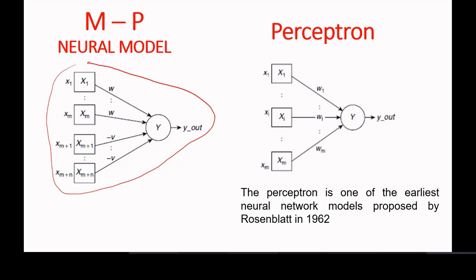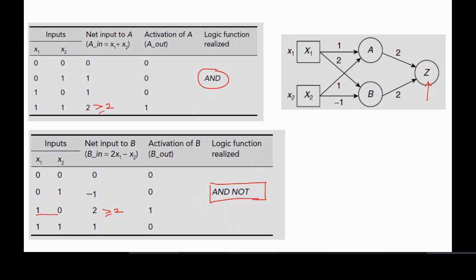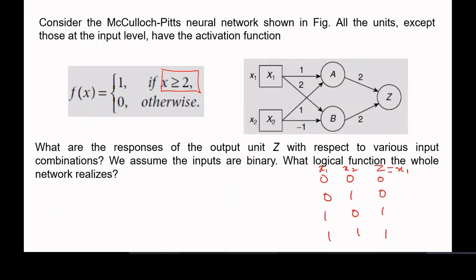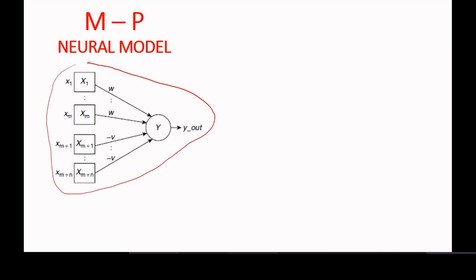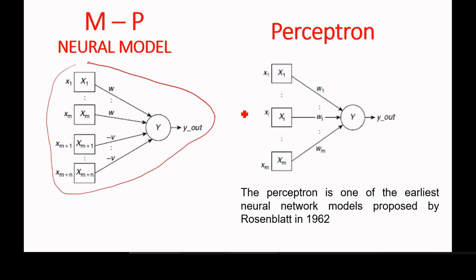In the earlier examples where we solved logic functions, we took the same weight for all inputs. In the McCulloch-Pitts model, all weights are equal — if you take a weight w, all should be w, and negative weights all have the same value. But in the perceptron, each input has a different weight. For input x1 we have w1, and for input xm we have wm. That is the important difference between the McCulloch-Pitts neural model and the perceptron.